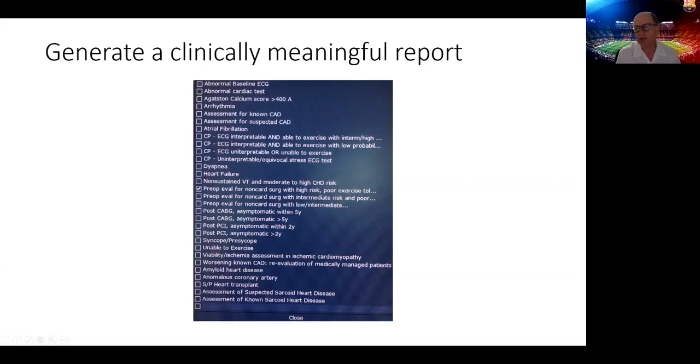The most important part of this whole exercise is to generate a clinically meaningful report. We talked about using the AUC criteria. You can see here all the AUC criteria for stress testing are listed, and some are not on the AUC list, but we still added them. We have amyloid heart disease, anomalous coronary arteries, heart transplant, some niche diagnoses and diseases that we thought we should capture that were not captured in the AUC.